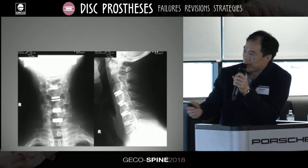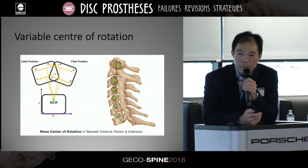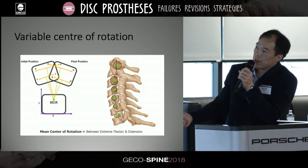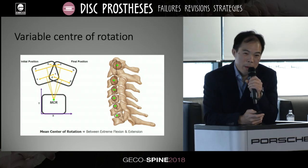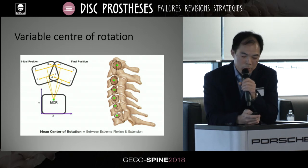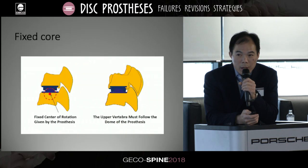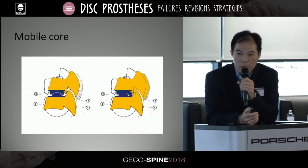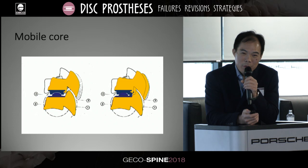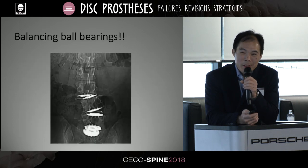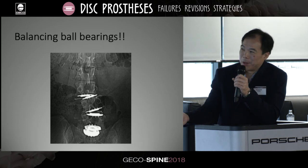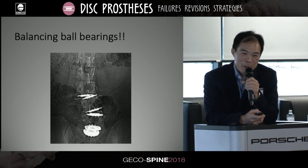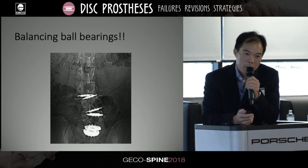A brief note on biomechanics: the center of rotation is posterior, which is why I try to place all implants as far back as possible and ensure they're lined up on the coronal plane. Regarding constrained versus unconstrained prostheses, constrained designs may put more load on facet joints while unconstrained ones take load off. A mobile core may be useful, but there may be too much mobility in multi-level cases. My best analogy is balancing ball bearings on top of each other.